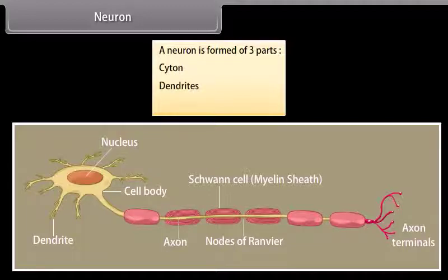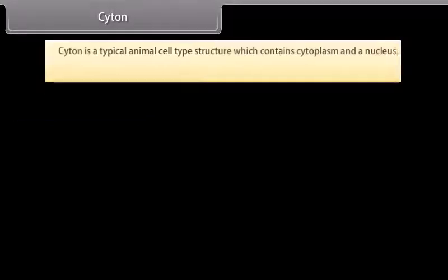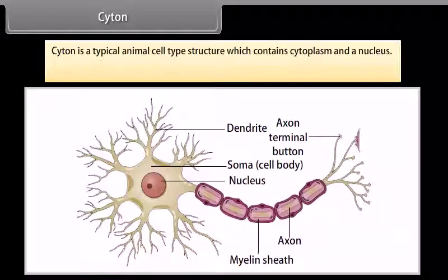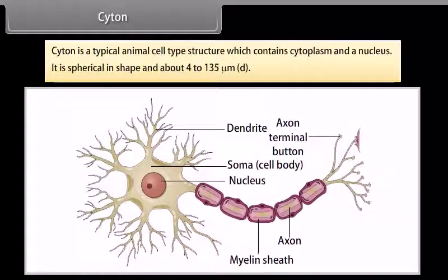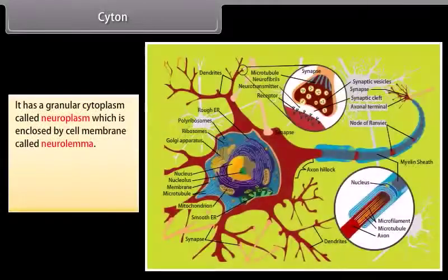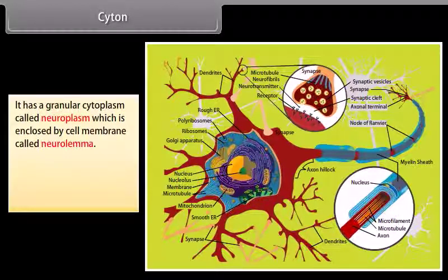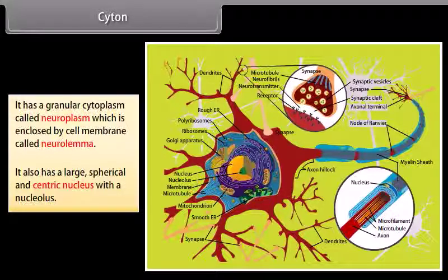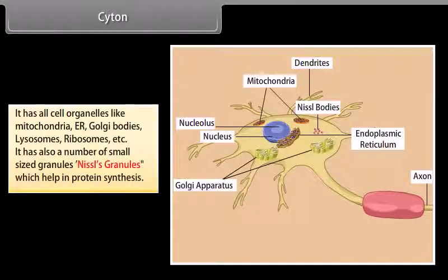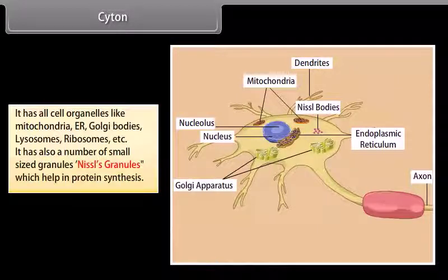Cytone is a typical animal cell-type structure which contains cytoplasm and a nucleus. It is spherical in shape and about 4 to 135 micrometers. It has granular cytoplasm called neuroplasm, enclosed by a cell membrane called neurolemma. It also has a large spherical centric nucleus. It has all cell organelles like mitochondria, ER, Golgi bodies, lysosomes, ribosomes, etc. It also has a number of small-sized granules called Nissl's granules, which help in protein synthesis.